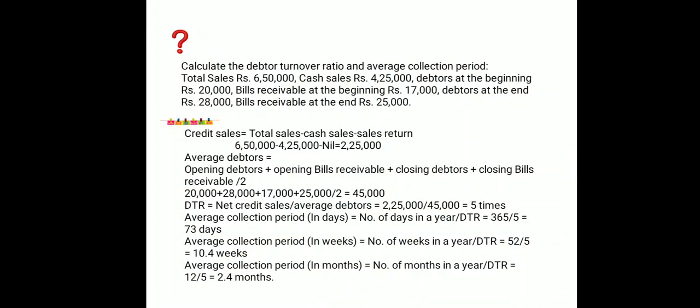Now putting the values into the formula: DTR = net credit sales divided by average debtors = 2,25,000 divided by 45,000 = 5 times. Turnover ratios are represented in times.